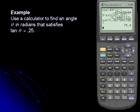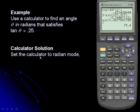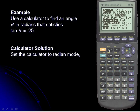Let's look at our last example. We want to find an angle in radians where the tangent equals 0.25. Since this problem asks for the angle in radians, we must set our calculator to radian mode. We'll go into the mode area, scroll down to the third line, select radian, and hit enter to lock it in. We'll go back to the main screen using the quit function, second and mode.